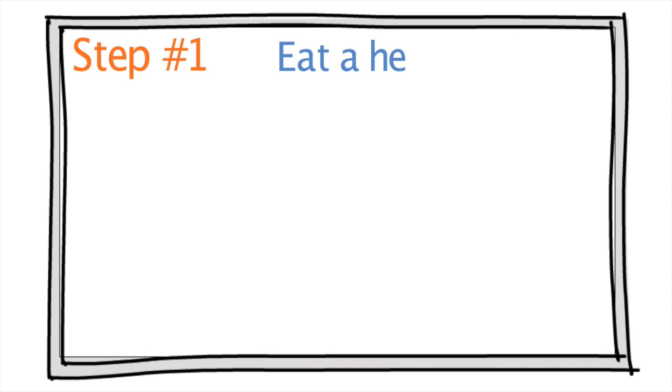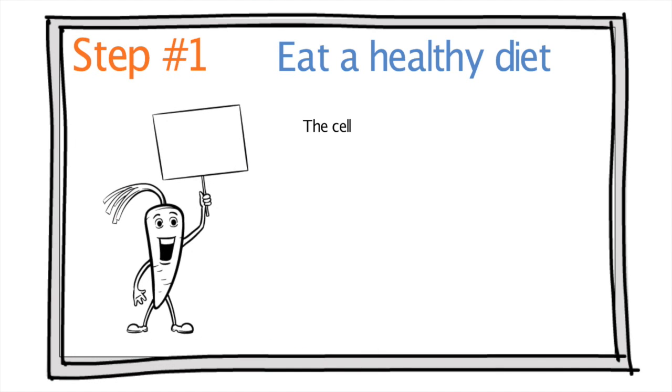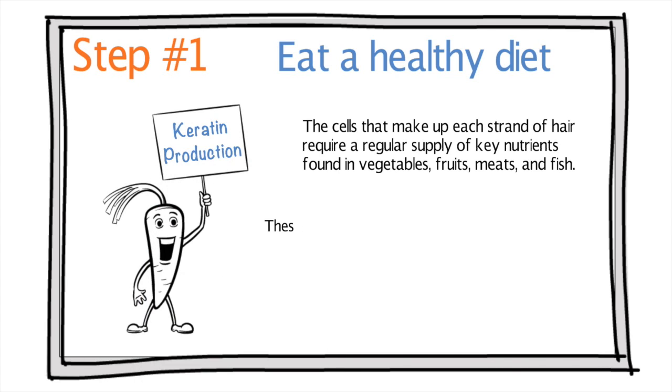Step number one: eat a healthy diet. The cells that make up each strand of hair require a regular supply of key nutrients found in vegetables, fruits, meats, and fish. These foods will help promote healthy keratin production, which are the building blocks of hair.